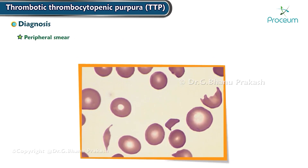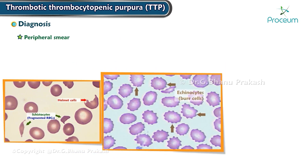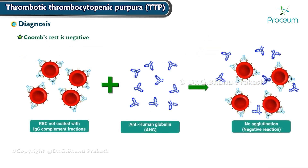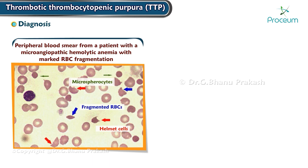Diagnosis: the peripheral smear shows fragmented RBCs or schistocytes, helmet cells, burr cells, and target cells. The bleeding time is increased with a normal PT and APTT. Platelet-associated IgG and complement levels are usually normal and the Coombs test is negative. The peripheral smear from a patient with microangiopathic hemolytic anemia shows marked red blood cell fragmentation with multiple helmet cells and other fragmented red blood cells. Microspherocytes are also seen and platelet number is reduced. The large platelets in the center of the field suggest that thrombocytopenia is due to enhanced destruction.